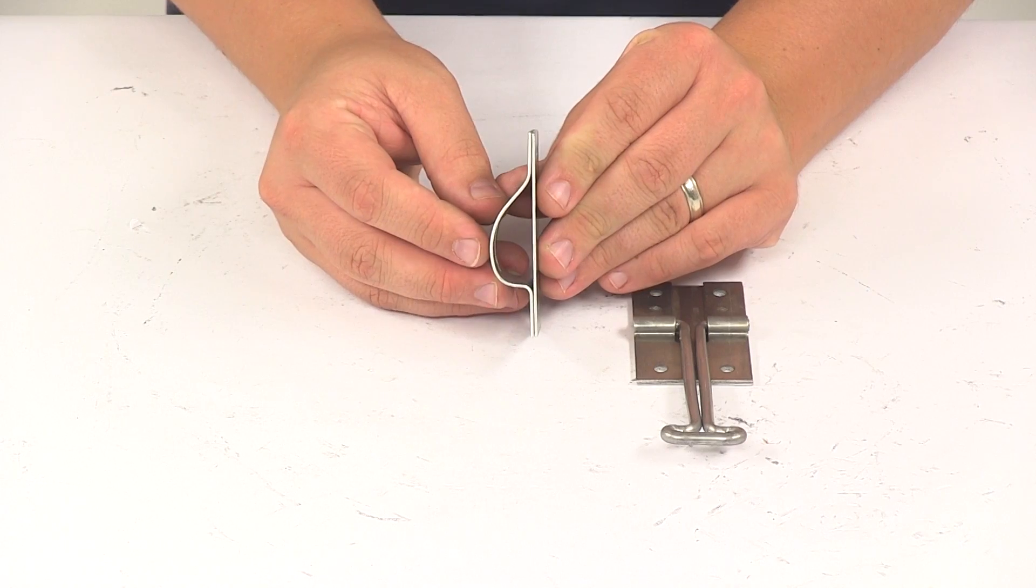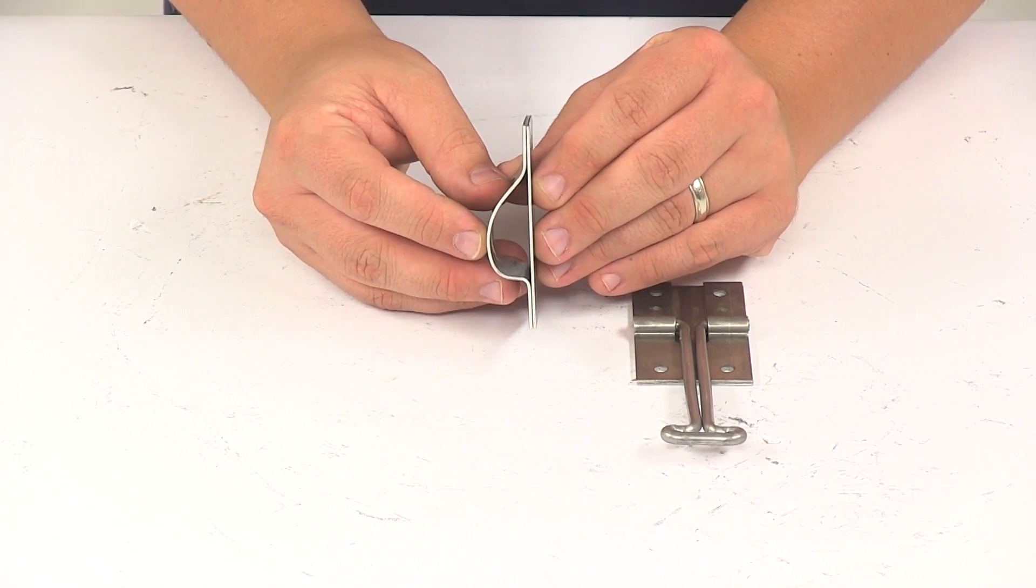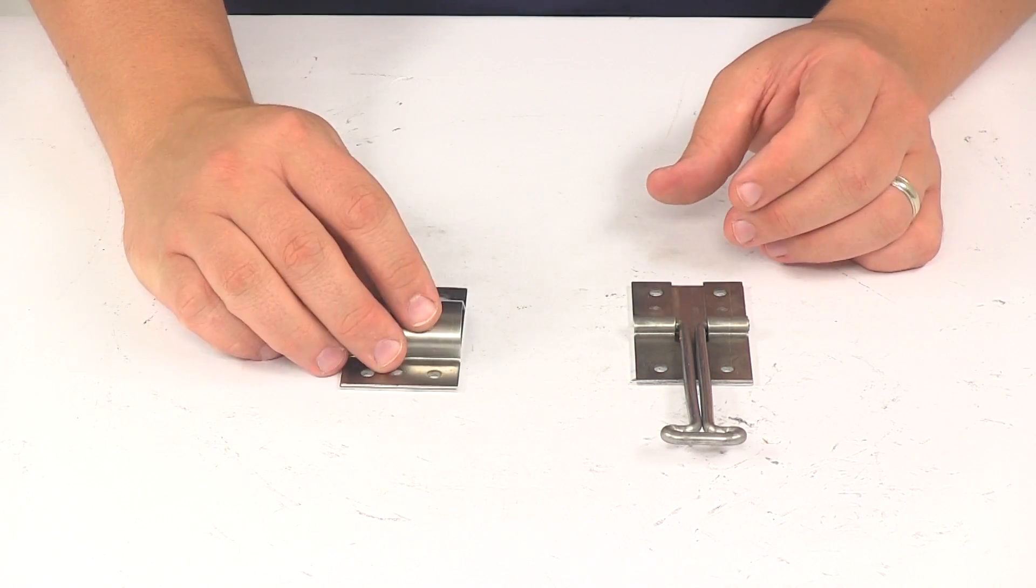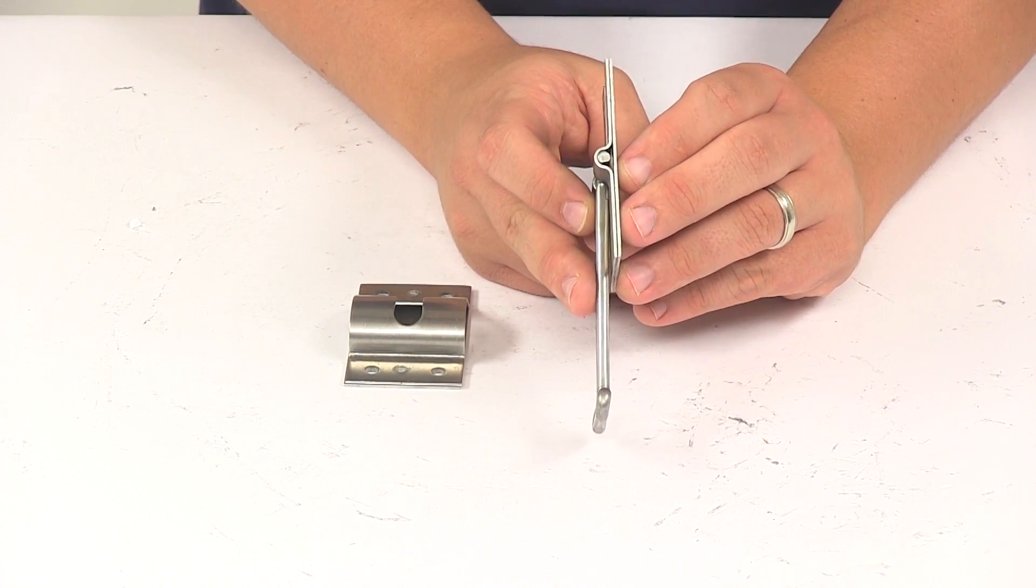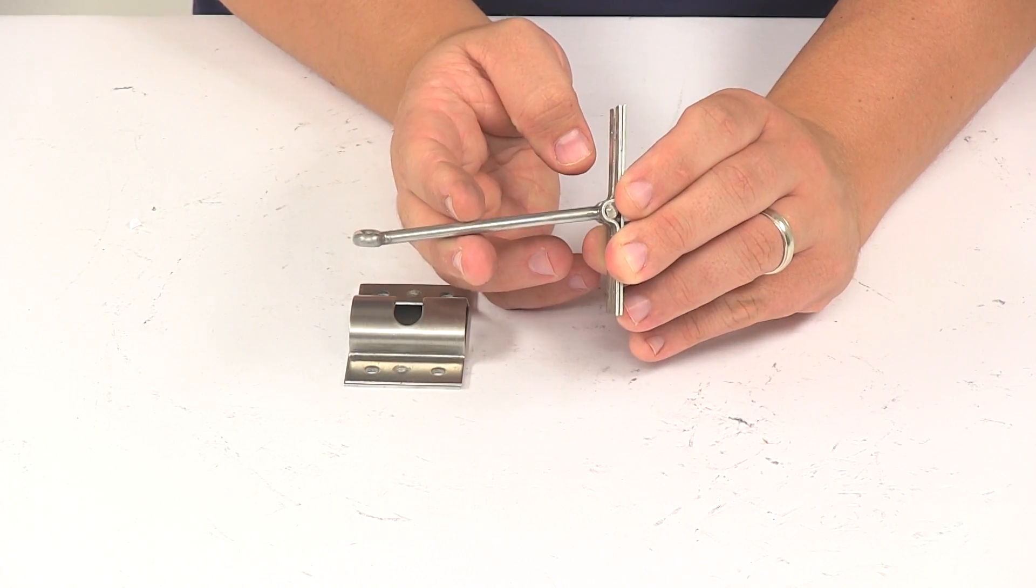This one's going to have an overall depth, that's how far it sticks out from the mounting surface, of about eleven-sixteenths of an inch deep. This piece is going to have a depth with that hook down of about three-eighths of an inch, and then again with it out about four inches.